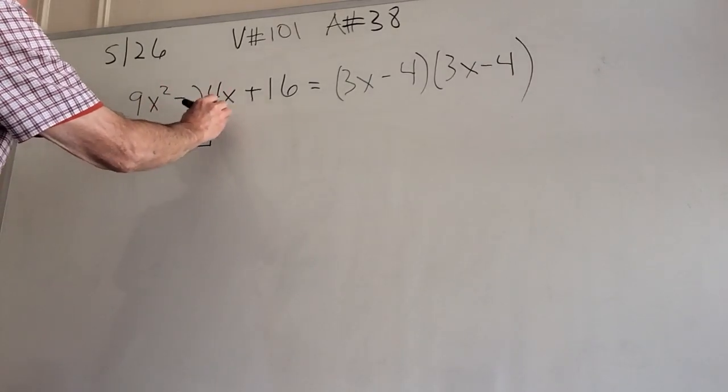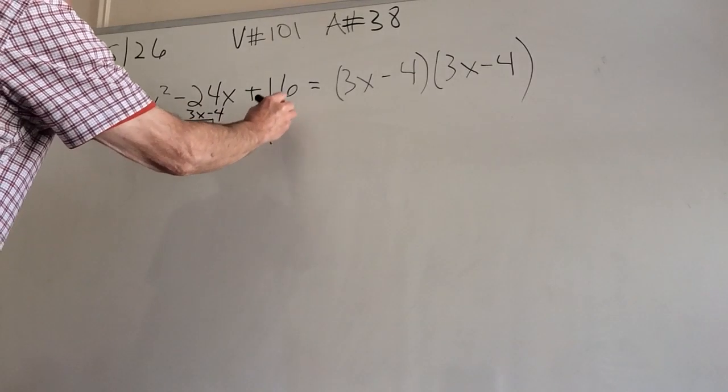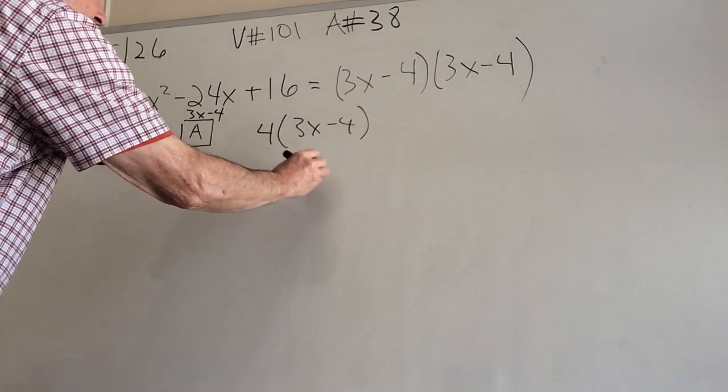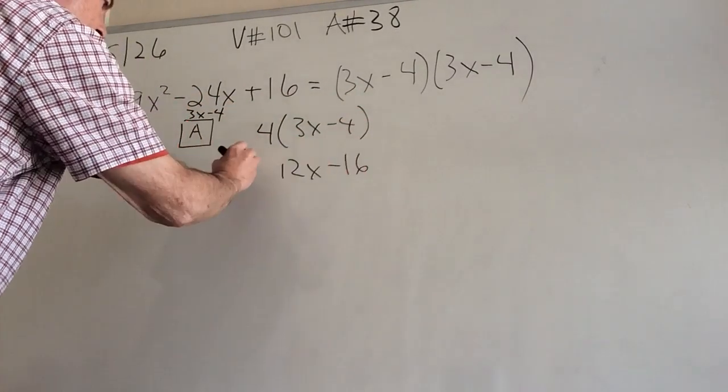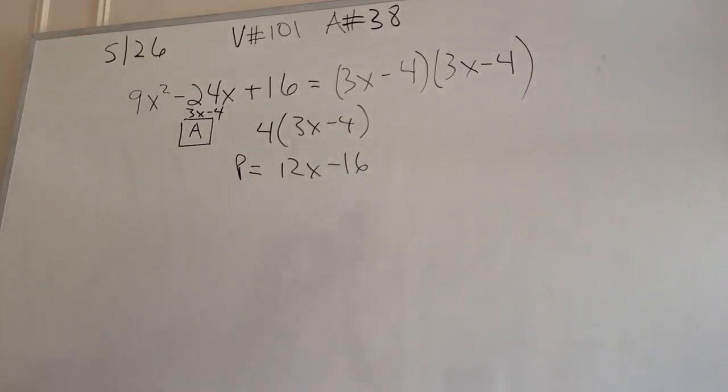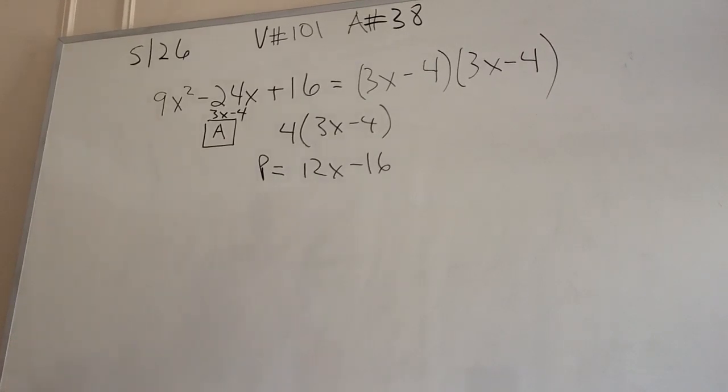So I just sort of snuck it in there so you can see it. And the perimeter would be 4, since there are 4 sides, times this. And that would be 12x minus 16p. And you'd be expected to do that. Really, I don't think it's all that difficult. And we have talked a lot about square roots already.